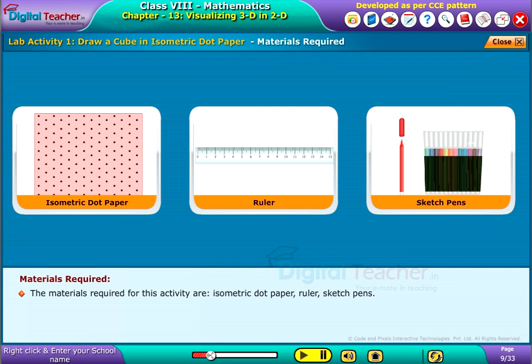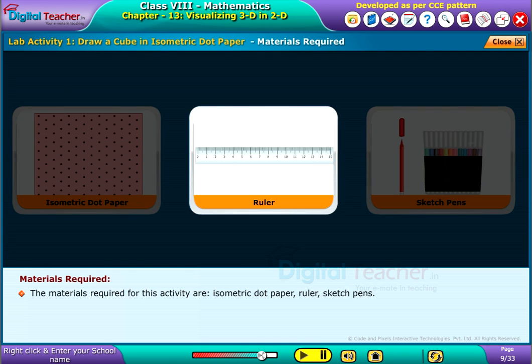The materials required for this activity are isometric dot paper, ruler, and sketch pens.